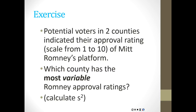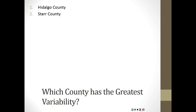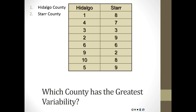Here's a practice exercise: potential voters in two counties indicated their approval rating of a political candidate's platform. Which county has the most variable approval ratings? Figure this out by calculating s squared — the sample variance. The counties are Hidalgo County and Star County, Texas. Work through the standard deviation for each. The answers are: Hidalgo County has a standard deviation of 10.29 and Star County 7.14, so Hidalgo is more variable. Note: this data is made up.